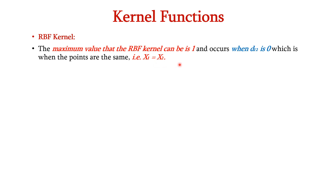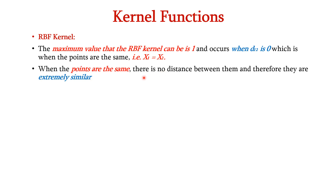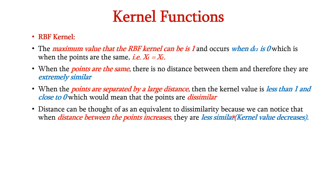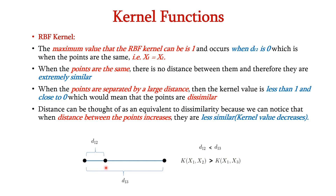The maximum value that the RBF kernel can take is 1, occurring when D12 is 0, meaning the points are identical (X1 equals X2). When the points are separated by a larger distance, the kernel value is less than 1 and close to 0, meaning the points are dissimilar. Distance can be thought of as equivalent to a dissimilarity measure. As shown in the diagram, we have three points X1, X2, and X3. D12 is the distance between X1 and X2, and D13 is the distance between X1 and X3. Since D12 is less than D13, if the distance is less there will be high similarity and a high kernel value; if the distance is large there will be less similarity and a low kernel value. So K of X1, X2 will be greater than K of X1, X3.